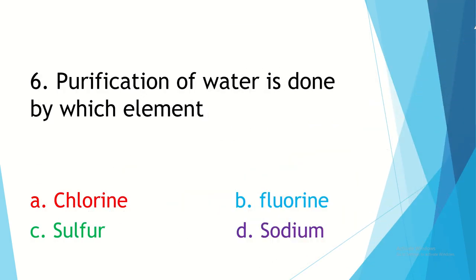Question 6. Purification of water is done by which element? Option A, chlorine. Option B, fluorine. Option C, sulphur. Option D, sodium. Your time starts now.